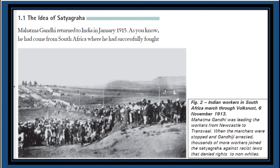Now let us study the idea of Satyagraha. The major tool or method by which Gandhi ji fought for freedom was truth and Ahimsa. Gandhi ji always felt that there is no need for violence when you are fighting against injustice or an unjust rule. Satyagraha was the major tool used by Mahatma Gandhi against the British.